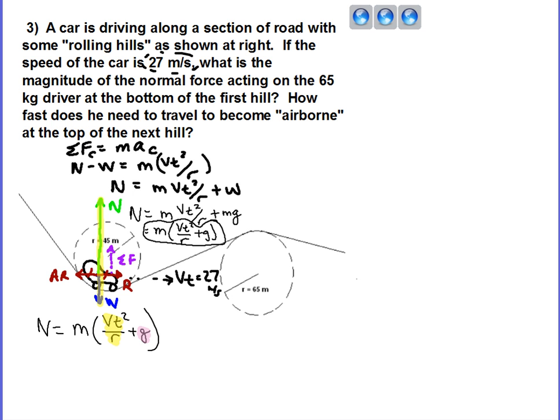Now I can go ahead and plug in some numbers here. We can do that relatively quickly based on the values that are being given here. 65 kilograms. Speed is 27 meters per second. Got to square that. The radius of that turn is 45 meters plus 9.8 meters per second squared. And I see that the normal force acting is about 1,690 newtons.